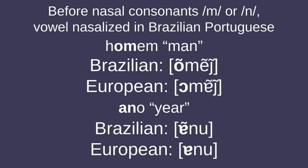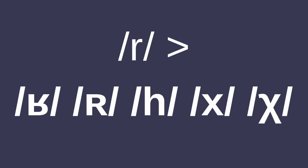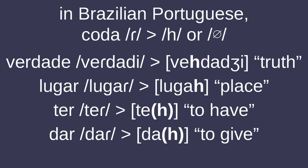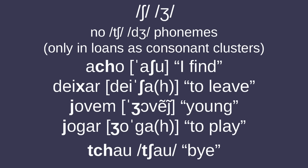Whenever a vowel comes before nasal consonants like M or N, the vowel is pronounced nasalized in Brazilian Portuguese. Both varieties of Portuguese stick out with their lack of palatal glides outside of the sequences /kw/ and /gw/. The rhotic trill shifted to /ʁ/, /χ/, /h/, /ɦ/, or a few other sounds depending on the dialect. In Brazilian Portuguese, coda R is often reduced to /h/ or dropped when part of verb infinitives.